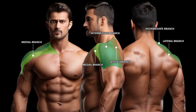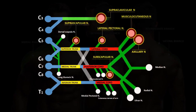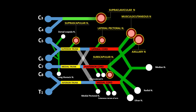The medial branch supplies the skin over the upper part of the chest. The intermediate branch provides sensory innervation to the skin over the upper and middle parts of the shoulder. And the lateral branch innervates the skin over the lateral part of the shoulder. The supraclavicular nerve was traditionally blocked by the proximal spread of injectate following interscalene plexus blockade to ensure pain-free surgery involving the shoulder.